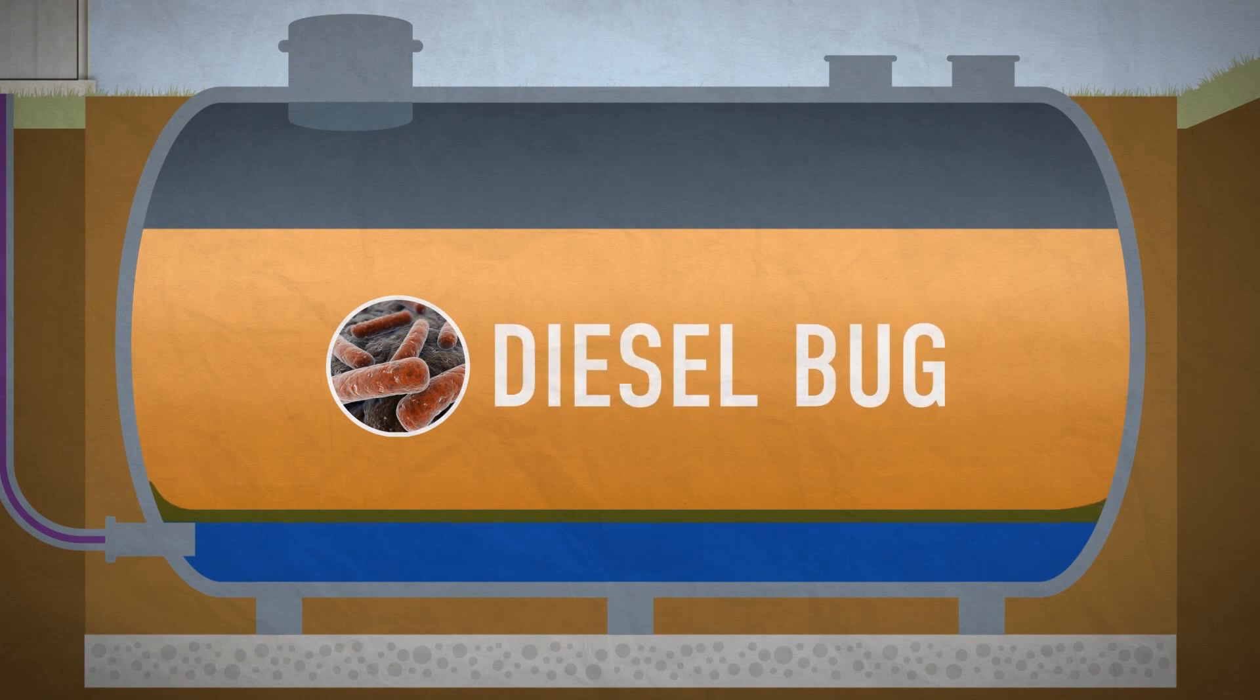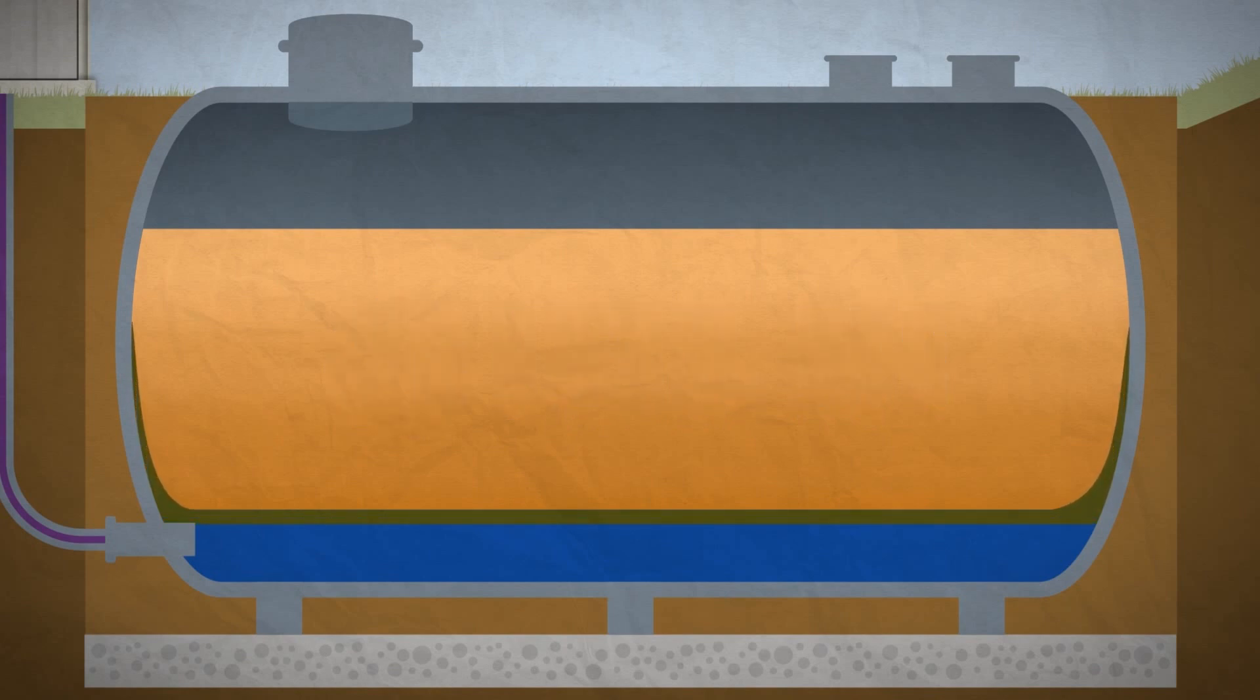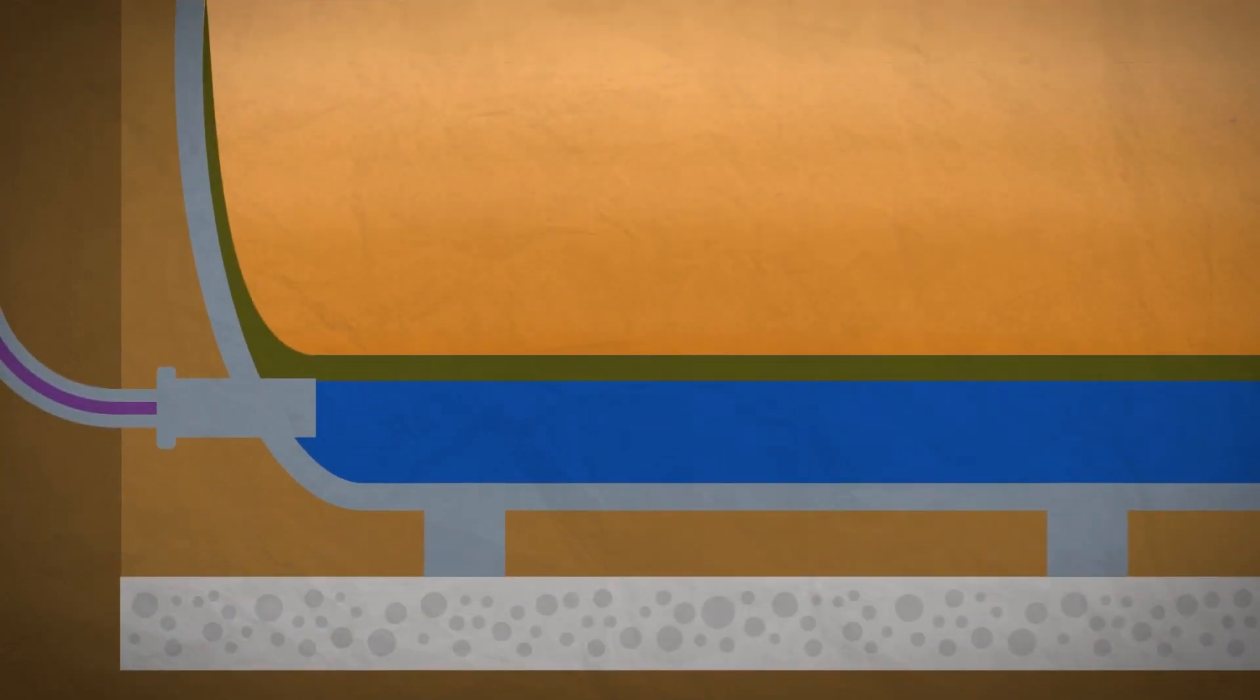Diesel bug is the generic term given to microbial growth in diesel. It occurs when bacteria feeds on the hydrocarbons in the fuel and multiply in the water. As a result, the bug usually grows in the rag layer, the point at which fuel and water meet.